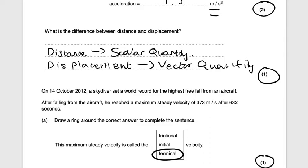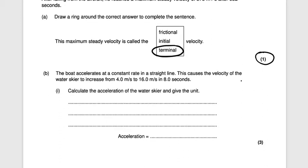Next question: the boat accelerates at a constant rate in a straight line, causing the velocity of the water skier to increase from 4 meters per second to 16 meters per second in 8 seconds. Calculate the acceleration of the water skier and give the unit — it's worth three marks, with one mark for the unit. Acceleration is the change in velocity divided by the time.